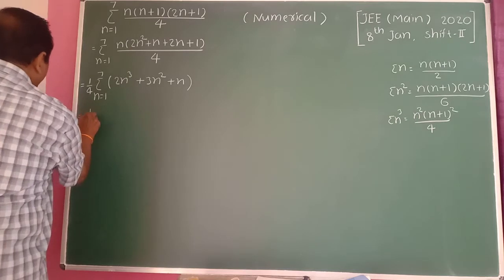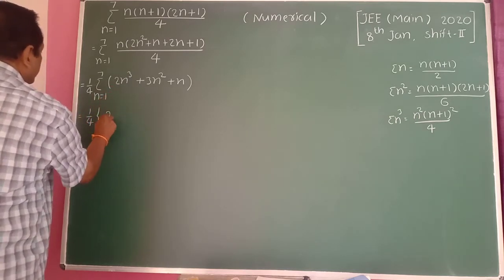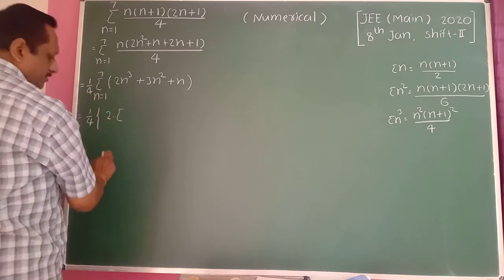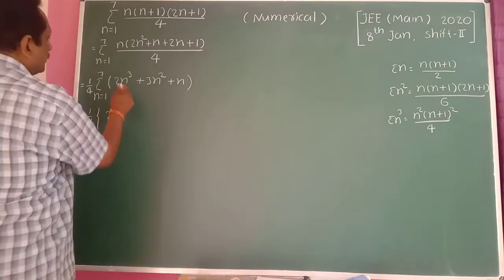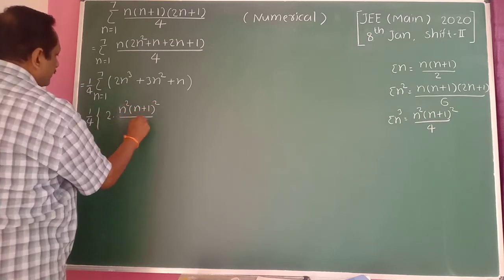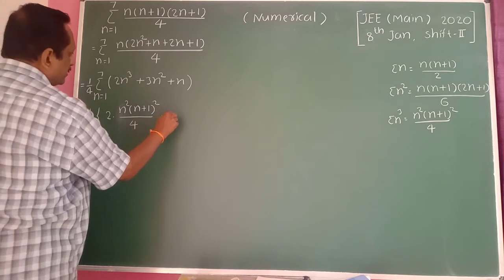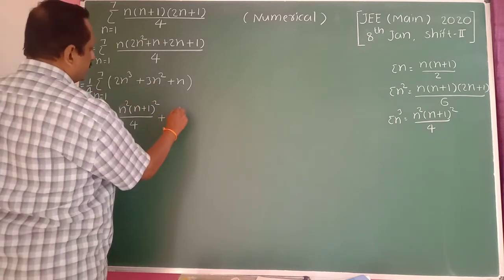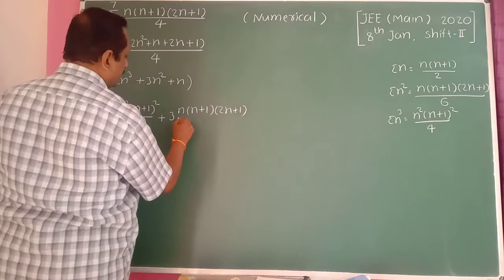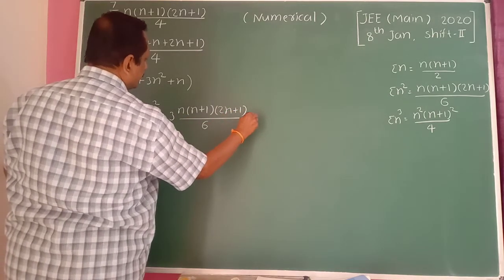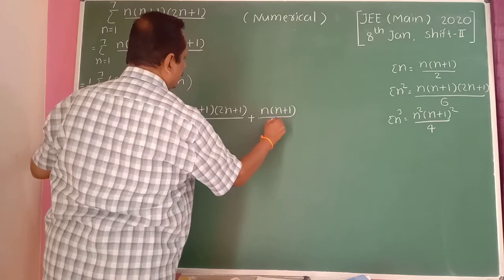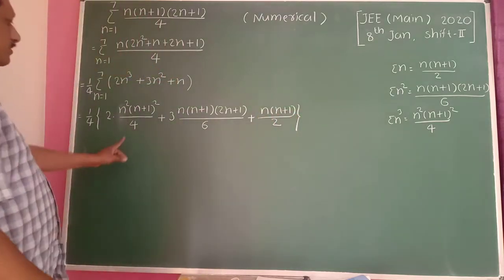Therefore this equals 1/4 into bracket: 2 times n squared times n plus 1 whole squared divided by 4, plus 3 times n into n plus 1 into 2n plus 1 divided by 6, plus n into n plus 1 divided by 2, divided by 2. There are 3 terms here.